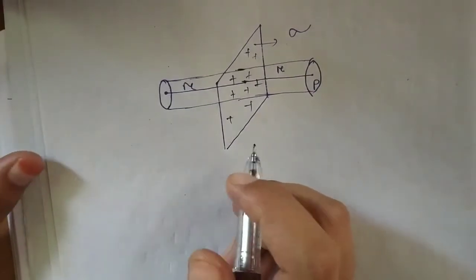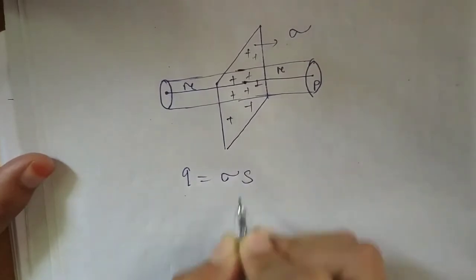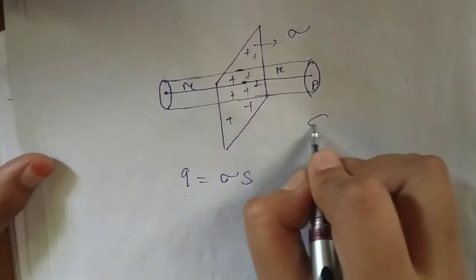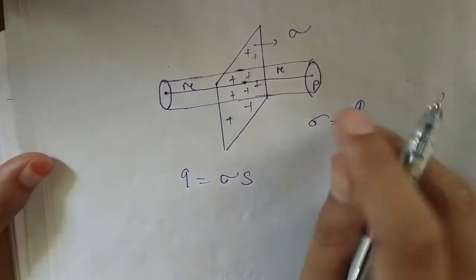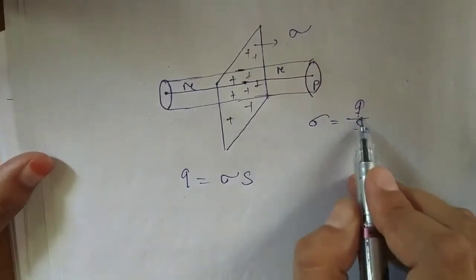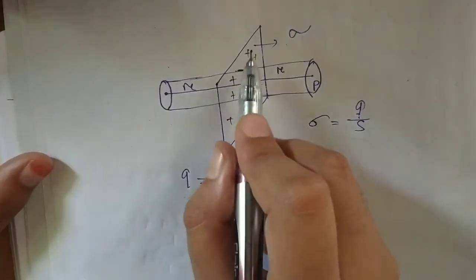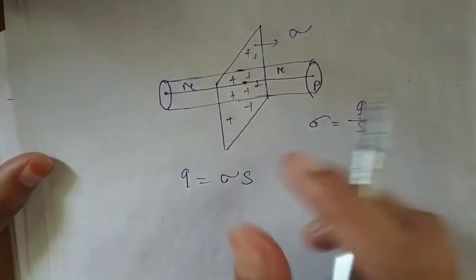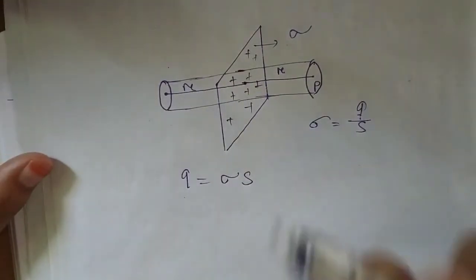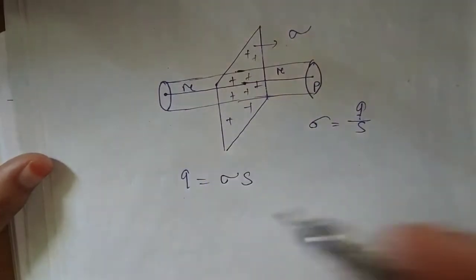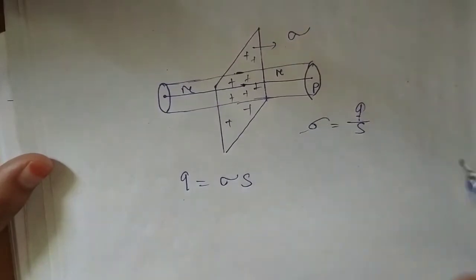What do you call the charge? Lambda L for a line, and for a surface charge you call it Sigma S. So Sigma is equal to Q divided by S. Here, Q is the charge enclosed by the Gaussian surface. Sigma is constant because the surface is uniformly charged. I apply the Gaussian surface using this surface charge density.